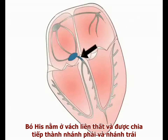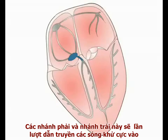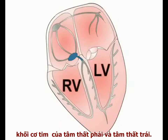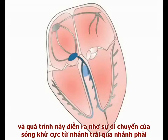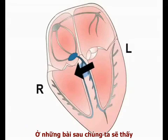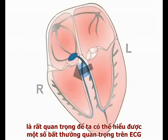The bundle of His lies in the interventricular septum and divides into right and left bundle branches. The right and left bundle branches transmit the depolarising signal into the muscle mass of the right and left ventricles respectively. The interventricular septum is the first part of the ventricular muscle mass to depolarise, and it does so by movement of current across the septum from the left towards the right bundle branch. This early left-to-right movement of current in the septum is crucial to understanding several important ECG abnormalities.